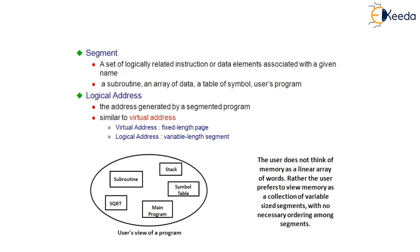Now we are going to understand a few drawbacks of virtual memory. Let us consider an example where we have 8 pages and 4 blocks in the main memory. We will be able to store any of the 8 pages in the available 4 blocks of the main memory. Now, what are we going to store in these pages or blocks? Primarily, we need to understand that we are dealing with memory — either main memory or secondary memory.